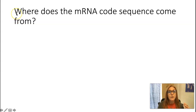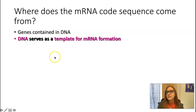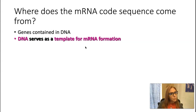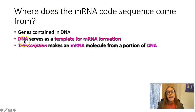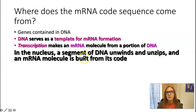So how do we get the mRNA code? Where does that sequence come from? It comes from the DNA. Genes are segments of DNA that serve as a template for mRNA formation. That process is called transcription. Each gene creates an mRNA molecule, and then that molecule is sent out to the ribosome to actually build the body and cellular structures.